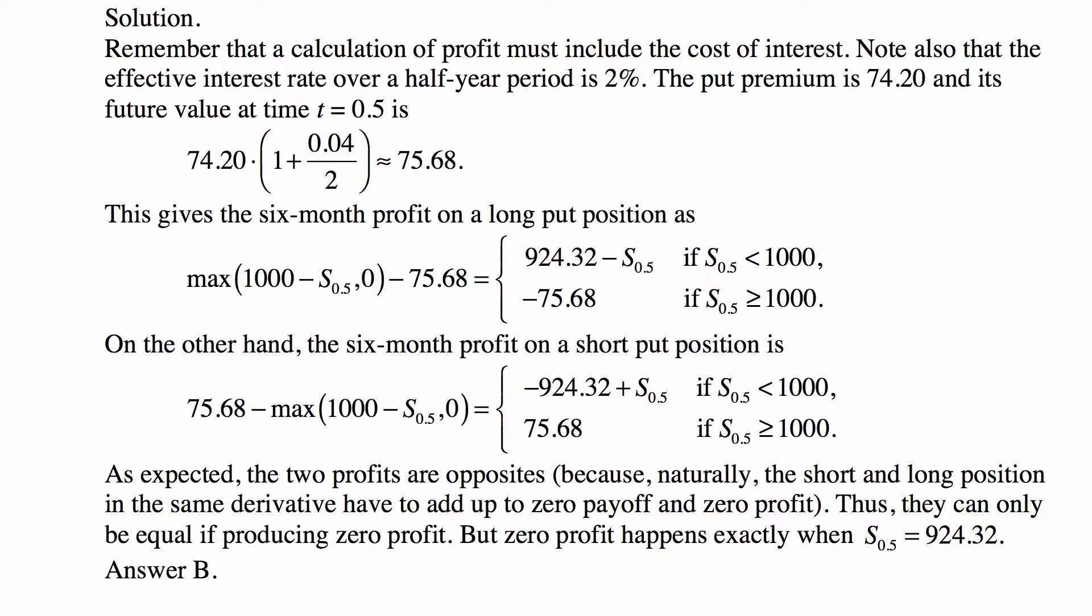You will have spent the accumulation of the value of 74.20. You will pay 74.20 upfront to get it, and then you will effectively, as a result, spend 75.68 if you do the calculation as of the moment of the exercise of the option.